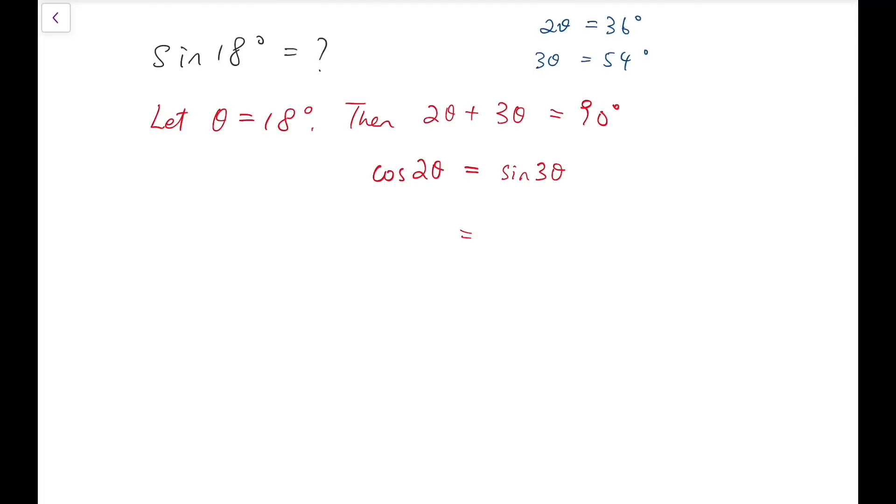Now making use of the triple angle identity, I'll just skip the derivation. And in fact it's 3 sine θ minus 4 sine cubed θ. And then I'm going to make use of the sine version of the double angle of cosine, which is 1 minus 2 sine square θ. And so rearranging that a bit, I will have 4 sine cubed minus 2 sine squared minus 3 sine θ plus 1 equals 0.